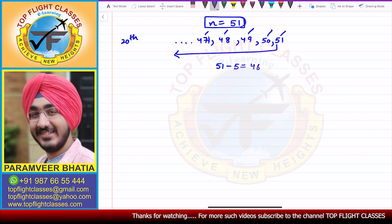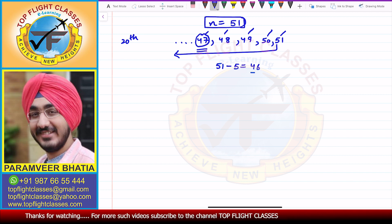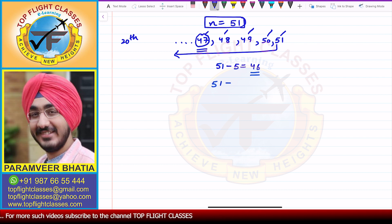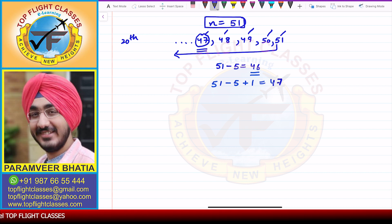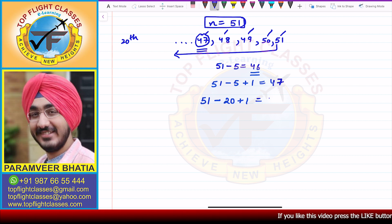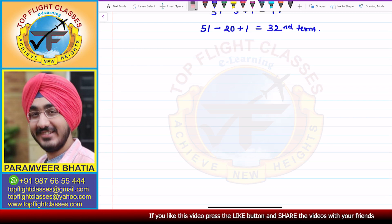To find the 5th term from the last, it comes out to be 47. But in our calculation it is 46, which is wrong. So what we do is 51 − 5 + 1 = 47 — that is the 5th term from the last, which is the 47th term. So in this case, for the 20th term, what I will do is 51 − 20 + 1, and I will get the 32nd term. That is the required term.